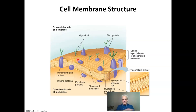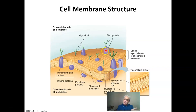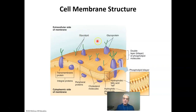These proteins also have other things attached to them — they can have carbohydrates attached to them, which are the little green things indicating carbohydrates attached to the proteins. The carbohydrates can also be attached to the lipid part of the cell membrane, and we call that a glycolipid. Anytime you say the word glyco, that means a carbohydrate, a sugar. So you can have glycoproteins or glycolipids.